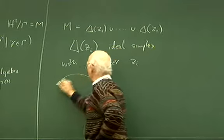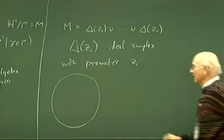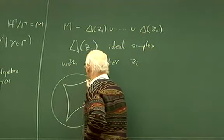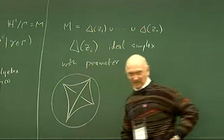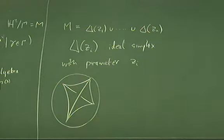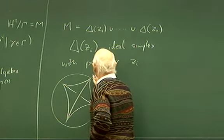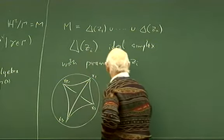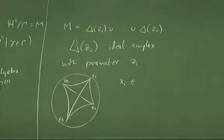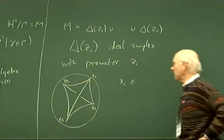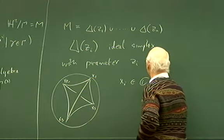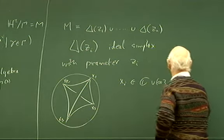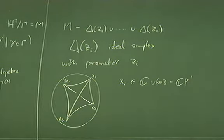Let me remind you what this means. You have your ideal simplex — a simplex with its vertices at infinity — a total of four vertices. I'll call these X₀, X₁, X₂, X₃. These vertices lie in the sphere at infinity of hyperbolic space. The sphere at infinity of hyperbolic space you can think of as ℂ ∪ ∞, or as the complex projective line. Let's think of it as ℂ ∪ ∞ — it's a nice two-sphere.